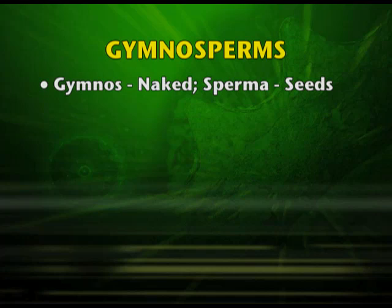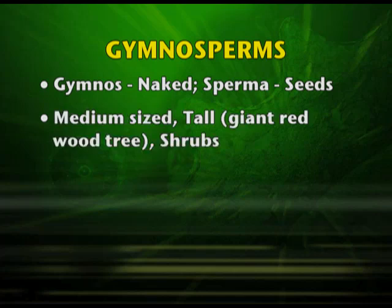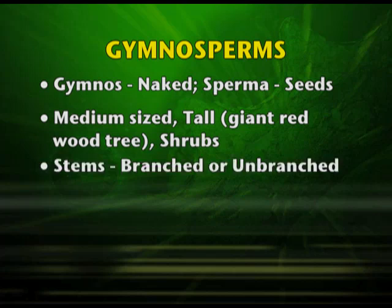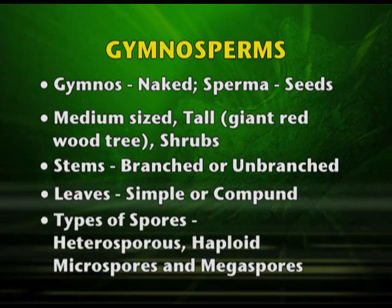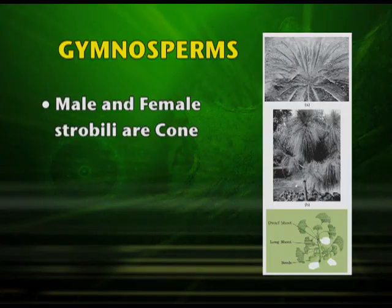Gymnosperms are naked-seeded plants — 'gymnos' means naked and 'sperma' means seeds. They may be medium-sized plants or huge trees like the giant redwood tree known as the sequoia, or shrubs. The stems are branched or unbranched. They have leaves which may be simple or compound. They are heterosporous, with haploid microspores and megaspores found in sporangia borne on sporophylls. The male and female strobili are known as cones — this is the cone of a pine, referred to as the strobilus.